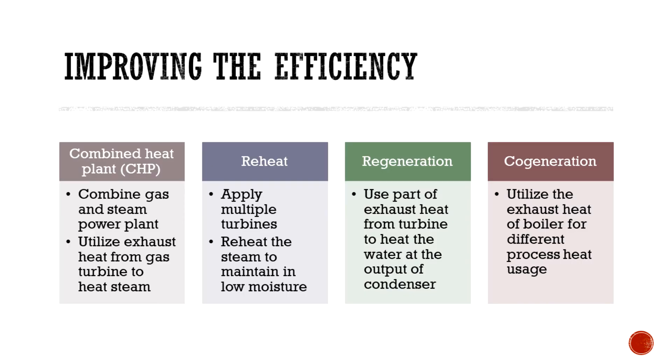To improve the efficiency, several ideas are presented. First, combined heat plant combine gas and steam power plant. The steam power plant utilizes the exhaust heat from gas turbine to heat the steam as the gas power plant has high temperature at the turbine exhaust.